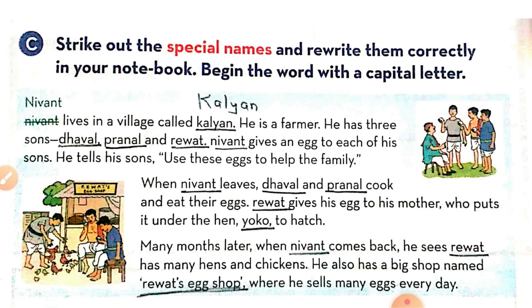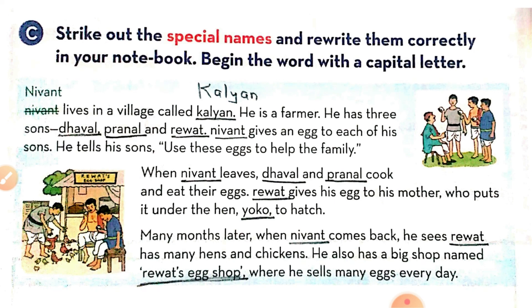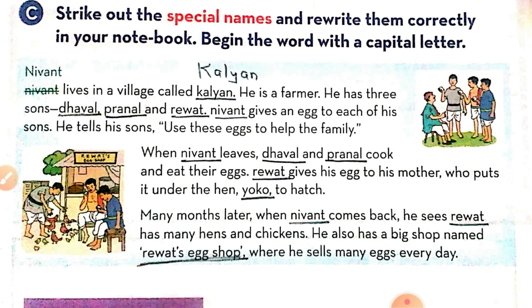Question C: Strike out the special names and rewrite them correctly in your notebook, beginning each word with a capital letter. Students, you have to underline the special names — just underline them — and then rewrite them again with a capital first letter.